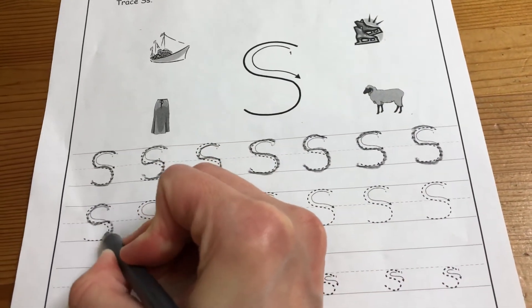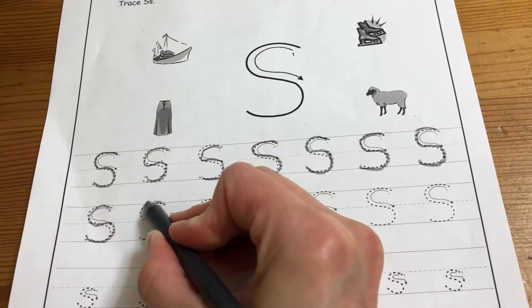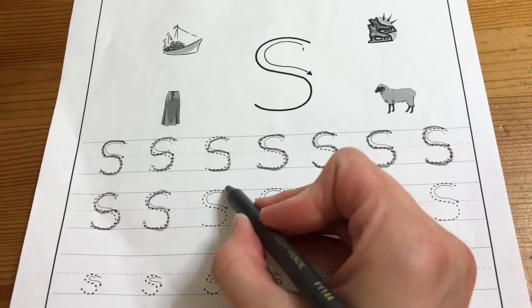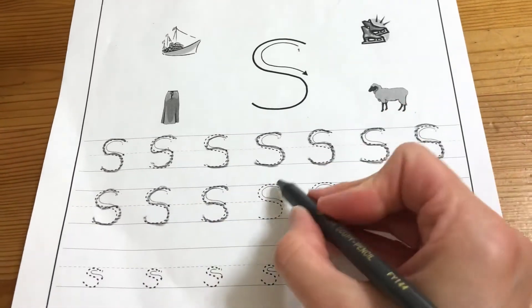Now, luckily, S, both big S and little S, we write them in the same way. They're just smaller, so it makes it much easier.